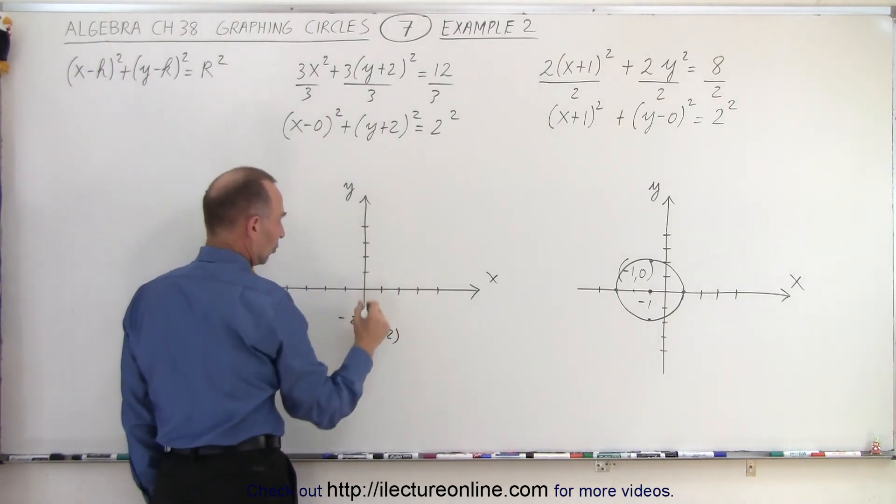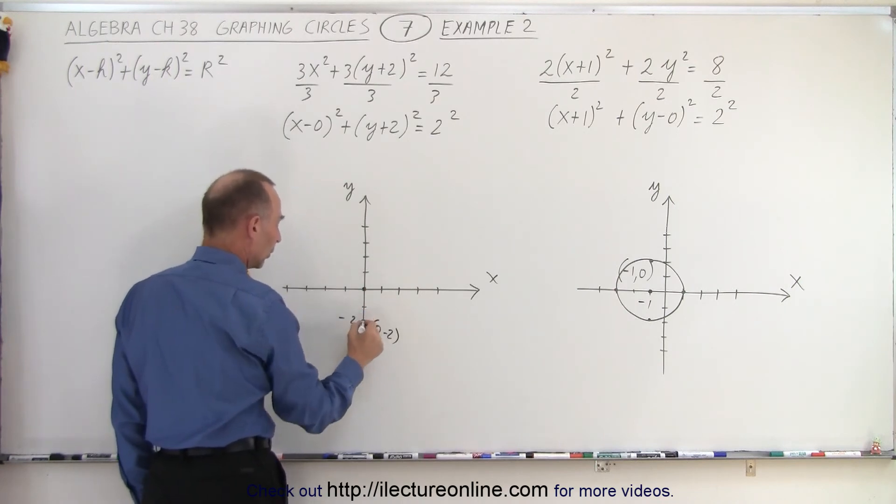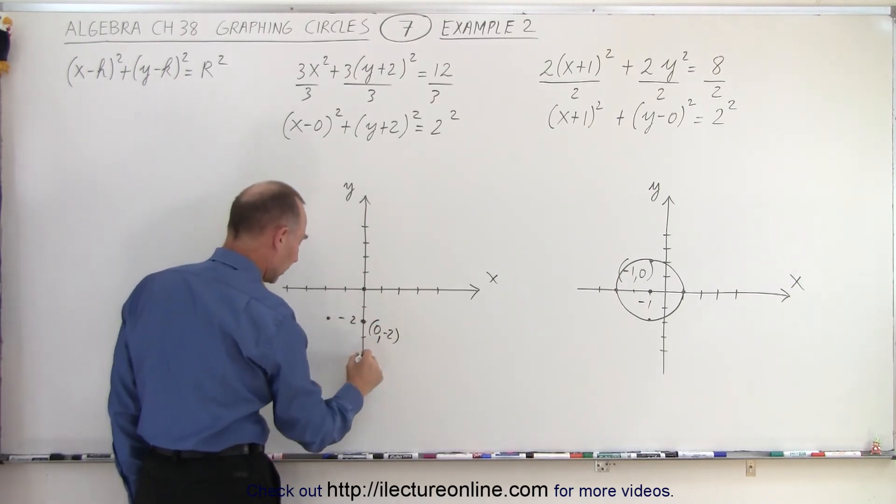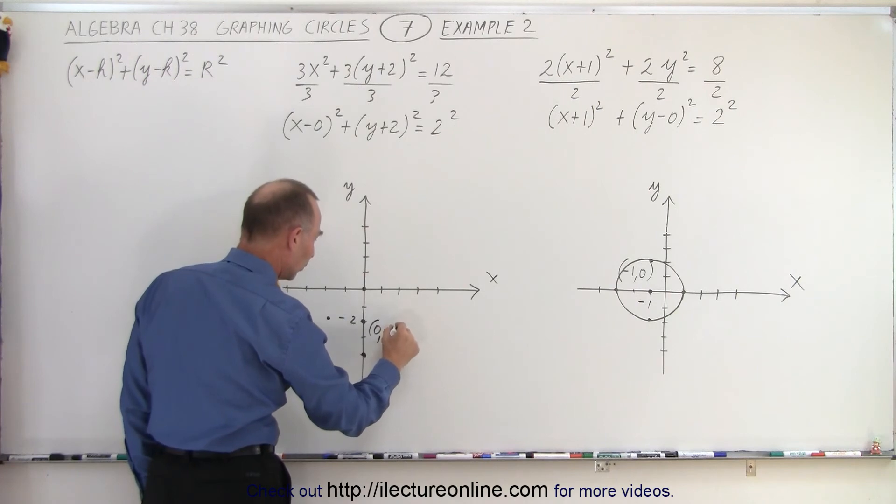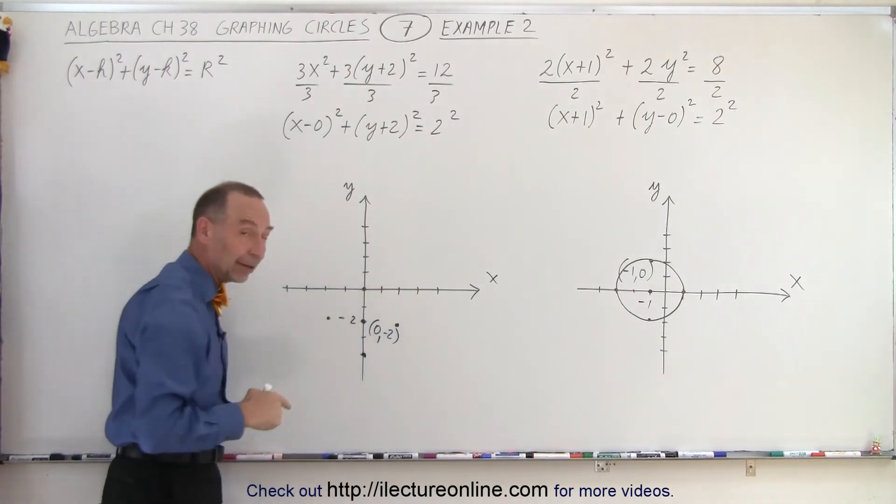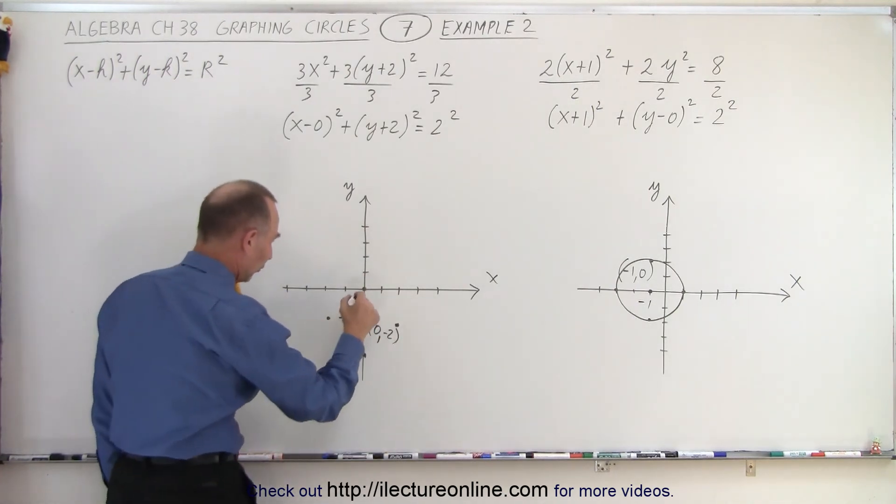And then since the radius is 2 we go up 2, we go to the left 2, we go down 2, and we go to the right 2 to find the 4 dots that lie on the circle. We now connect those 4 dots.